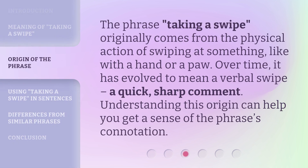The phrase 'taking a swipe' originally comes from the physical action of swiping at something, like with a hand or a paw. Over time, it has evolved to mean a verbal swipe — a quick, sharp comment. Understanding this origin can help you get a sense of the phrase's connotation.